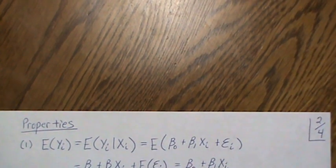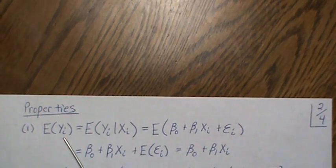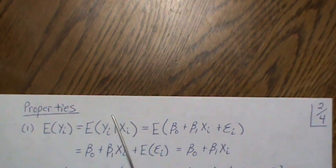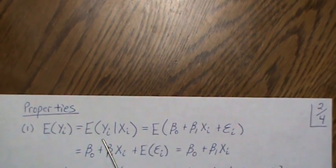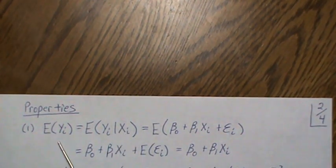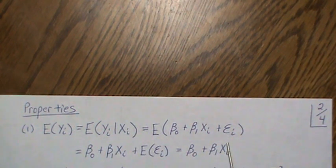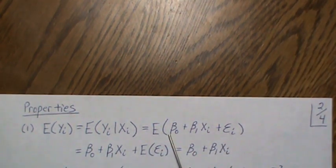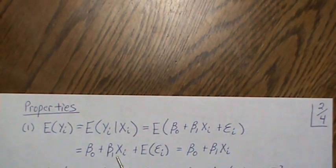Later in this playlist we'll address how to deal with heteroscedasticity. From the standard assumptions, the expected value of y — often written as E[y|x] or just E[y] — equals beta-0 plus beta-1 x, because beta-0, beta-1, and x are constants, and E[epsilon] = 0.